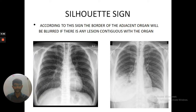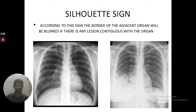Before going into that, we need to study an important sign — the silhouette sign. According to this sign, the border of any adjacent organ will be blurred if there is any lesion contiguous with that organ. The definition seems difficult, but when you understand it with an example, it will be very easy.